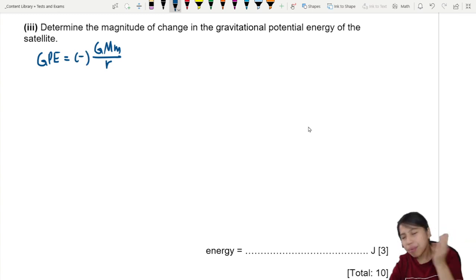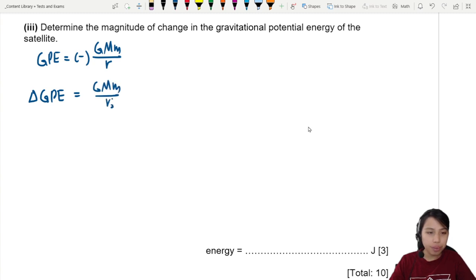Sometimes you may say, Miss, can we put negative sign? Can. Negative is to just tell me that it's attractive mass. But it's not strict. If you don't write the negative sign, it's okay. I just want to find the difference in magnitude, so I'm going to ignore the negative. I will have GMM over R2 minus GMM over R1, final minus initial. I'm going to factorize this: GMM times 1 over R2 minus 1 over R1.